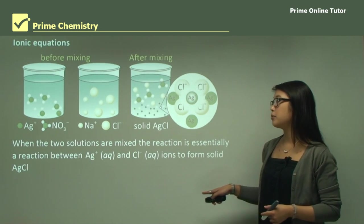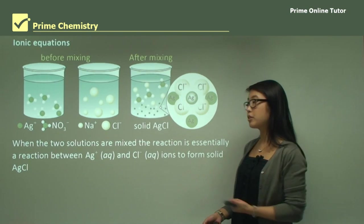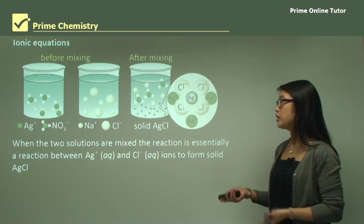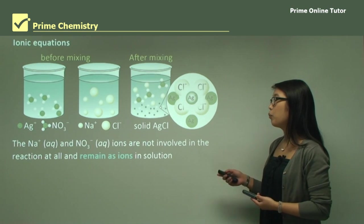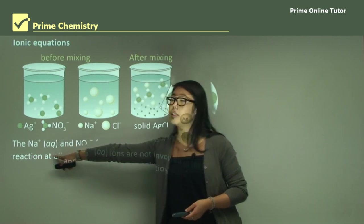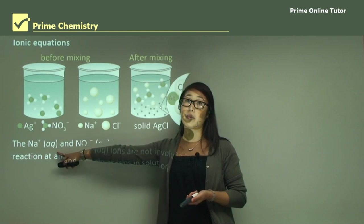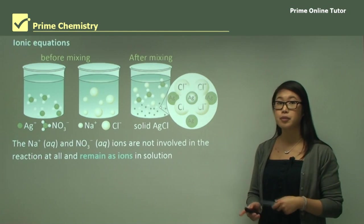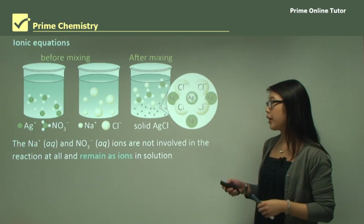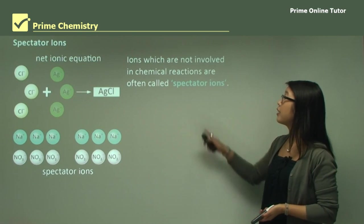Essentially we get a reaction between only the silver in aqueous solution and the chloride in aqueous solution, and when they react together we get a solid formed — silver chloride. The sodium and the nitrate (NO3) are both in aqueous solution, written as AQ, and they're not involved in the reaction because it's only really occurring between the silver ions and the chloride ions.